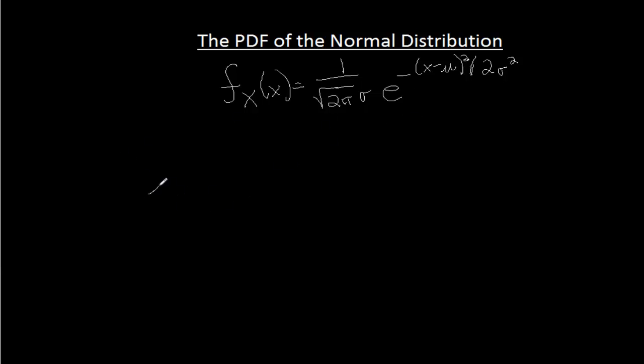So if we take the integral from negative infinity to infinity, this is how we check to see if it's a PDF. We see that it's non-negative, because this is non-negative, so long as sigma is positive, and then we see that e to a power is always non-negative. So the whole thing is non-negative,